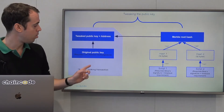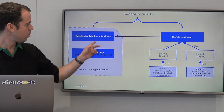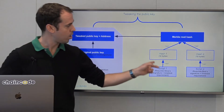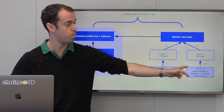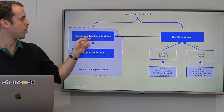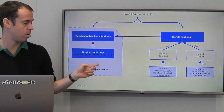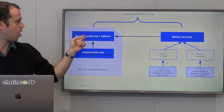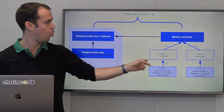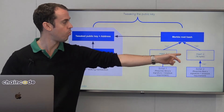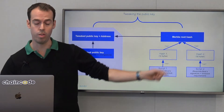Thank you to BitMEX for this image. We create a public key, we can have a script or a tree of scripts, and then we tweak that public key with the Merkle root hash. We can then spend that transaction either using the tweaked public key or the tweaked private key to sign, or one of these script paths with a proof that the public key was tweaked with this Merkle tree.